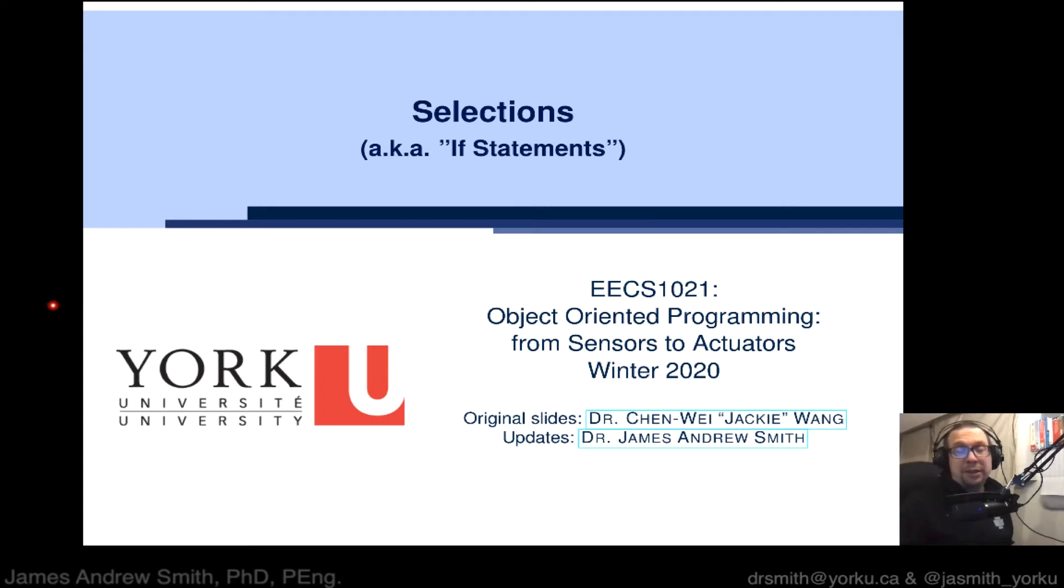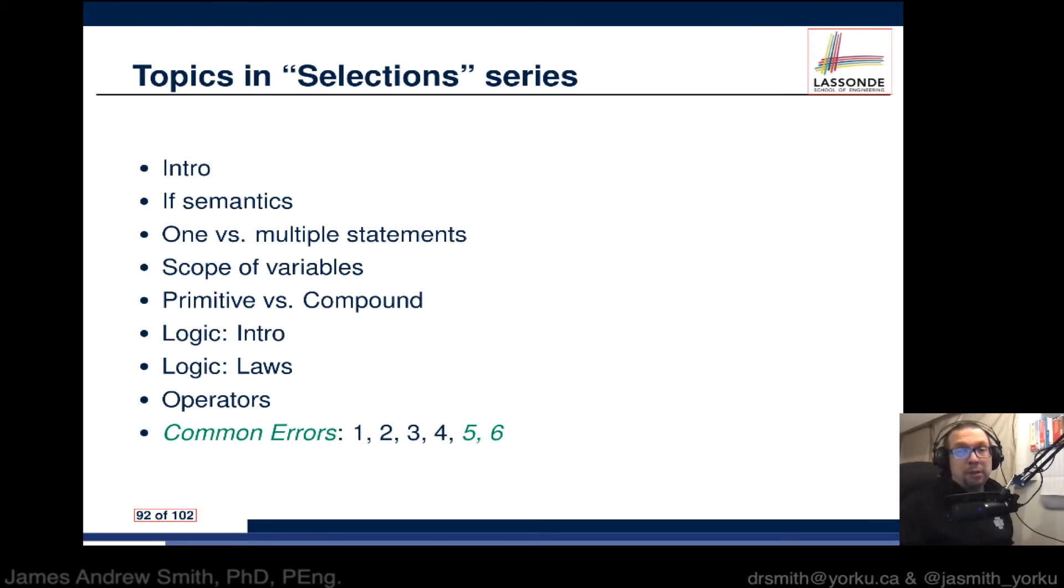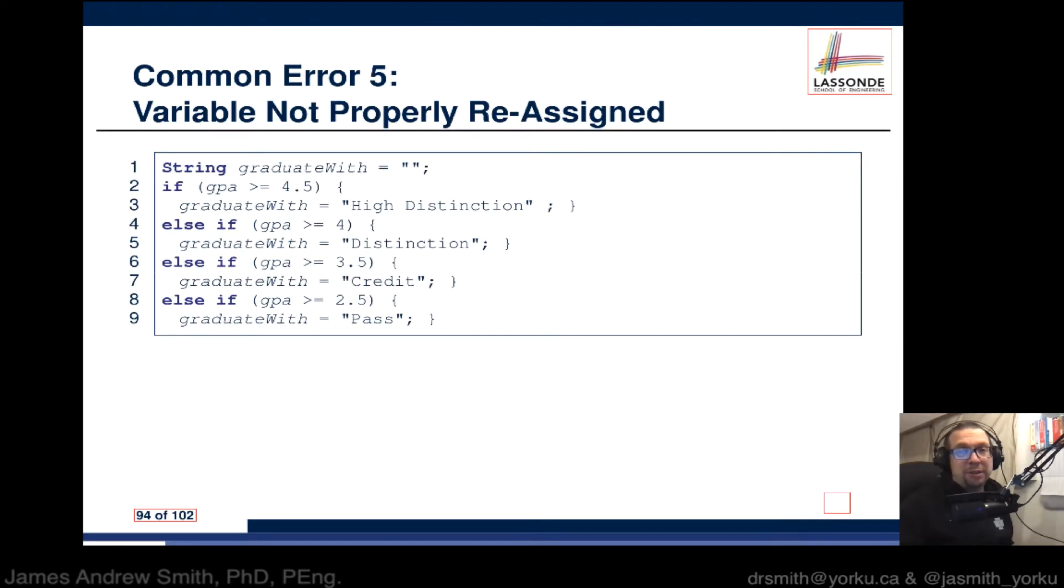Hi everyone, we're going to take a look at another set of common errors in Java. We'll cover errors five and six, and then a tricky thing after that. Common error number five is variables not properly reassigned. You have a variable called graduateWith initialized with an empty string, and then you have some if-else statements that come afterwards on lines two through nine.